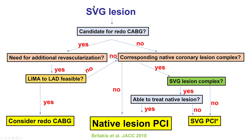Quite often, in patients who present with vein graft lesions, we will treat the native lesions because the long-term patency is better with PCI of the native coronary artery compared with PCI of the vein graft. However, the native coronary lesion can sometimes be very complex. So in patients who have a complex native coronary lesion and have a simple vein graft lesion, quite often we will still treat the vein graft.